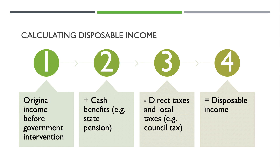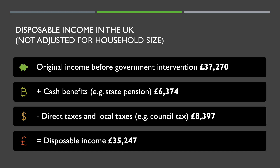The way we calculate disposable income is to take original income before any intervention — for example wages from a job or interest from savings — then add on cash benefits such as the state pension, but take off direct taxes including income tax and national insurance, and local taxes including council tax. Looking at UK data not adjusted for household size: original income is just over £37,000 a year, just over £6,000 is paid in cash benefits per household, but direct and local taxes take off over £8,000, giving a disposable income of just over £35,000 a year.